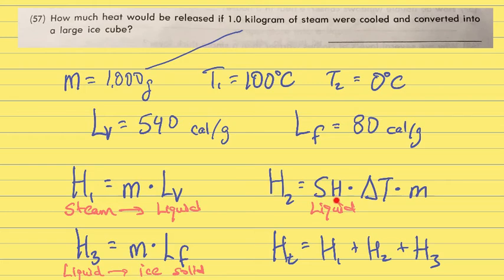Now this, SH, remember that is the specific heat, which for water is just one. And the change in temperature is going to be T2 minus T1. So basically 100 degrees. And then times the mass times one. All right. So you get a big number for that.